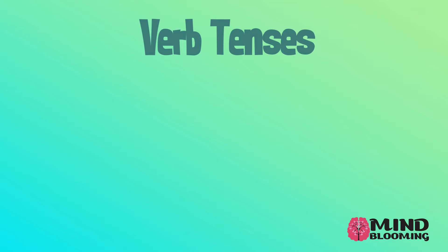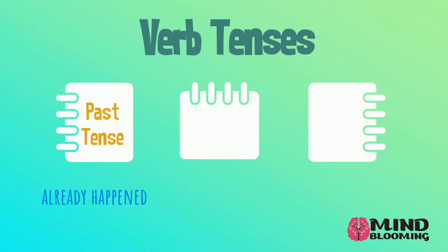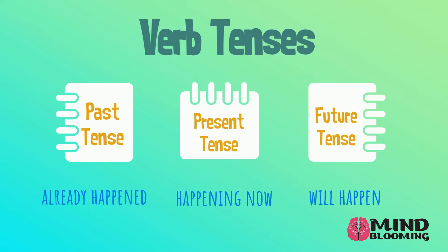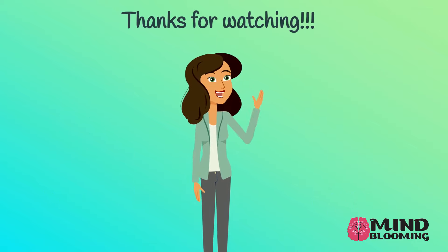So far, we learned that we have three verb tenses. Past tense means it already happened. The present tense means it is happening now. And the future tense means that it will happen. Thanks for watching.